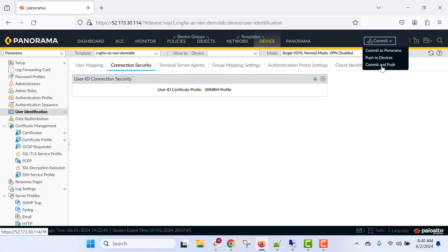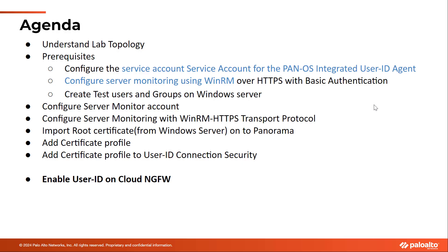After adding this connection security configuration, go ahead and commit and push the configuration. With this, we are done with the basic required configurations on the Windows server and Panorama to establish connectivity. Now let's see how to enable User ID on Cloud NGFW.